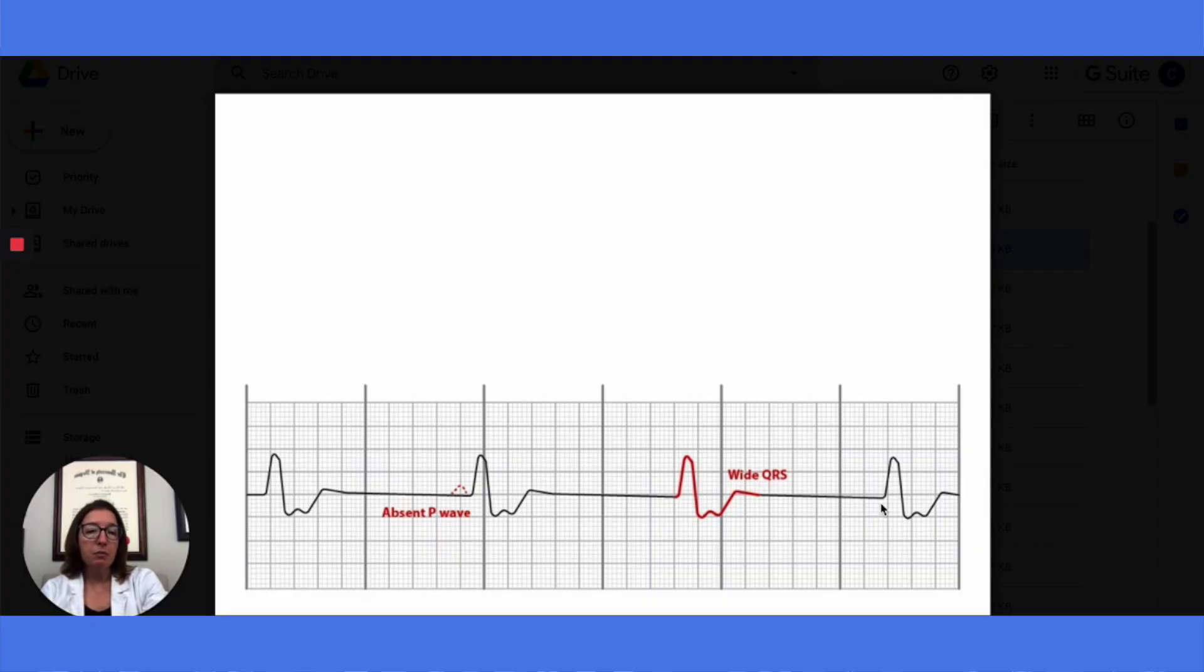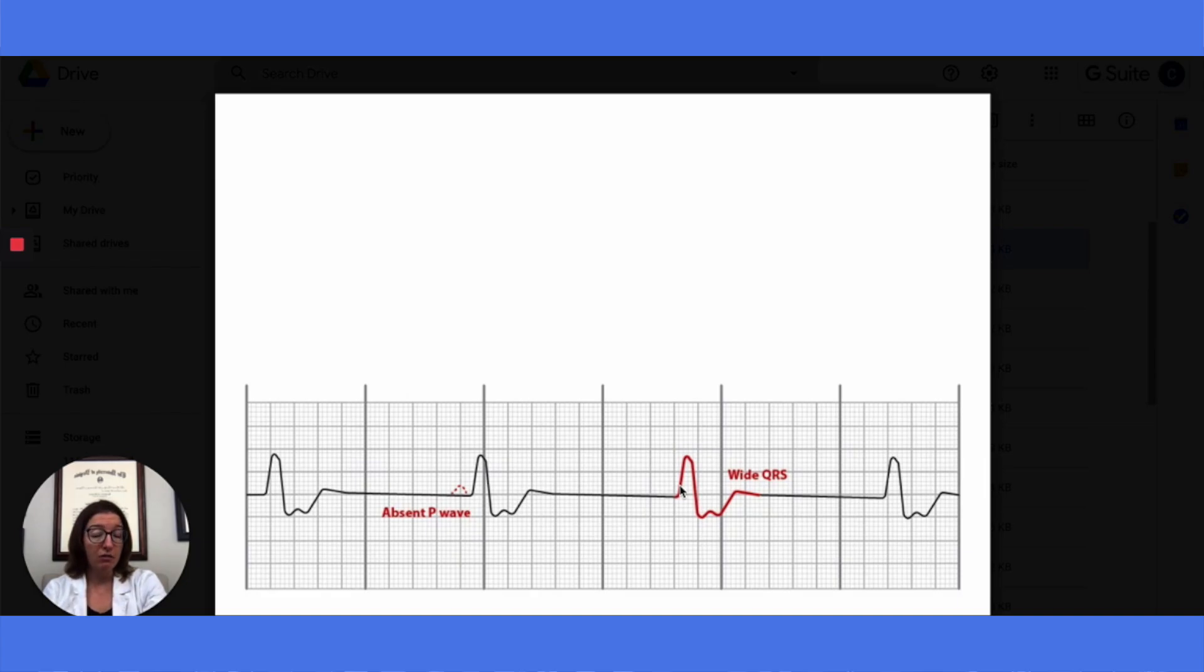It is possible to have an accelerated ventricular rhythm, which would have a heart rate that would be over 40. But for a normal idioventricular rhythm, we would expect a heart rate under 40. In terms of treatment, idioventricular rhythms are typically transient and often don't require treatment at all.